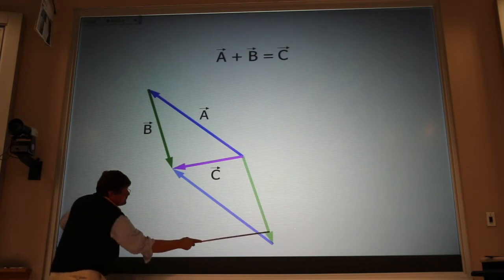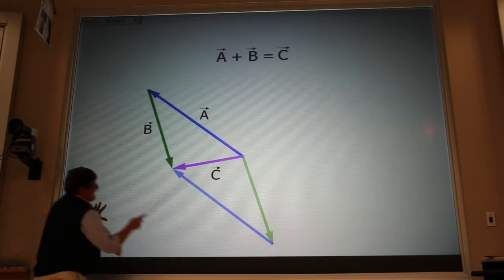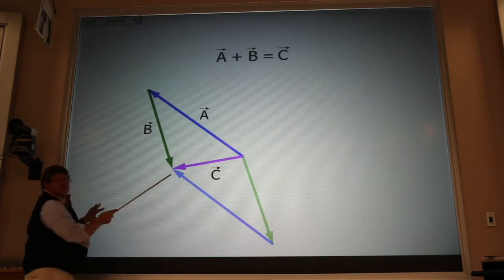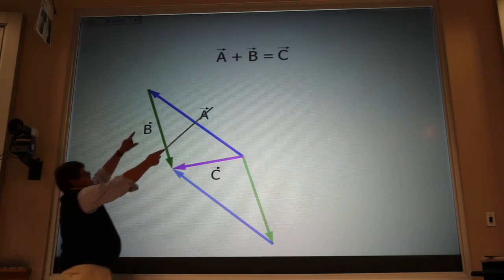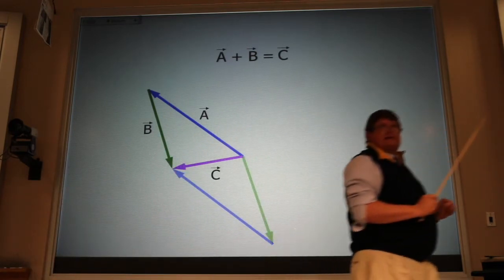Here, I started with B, and then I added A. Either way, I get the same result. So I can commute when I'm adding vectors.